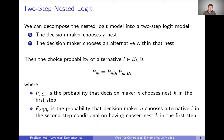In the first step, a decision maker chooses a nest — we've split our alternatives into these nests. Then in the second step, once they're in that nest, they choose among the alternatives within it. So first they choose a nest, and then in the second step they choose among the alternatives in the nest they selected.